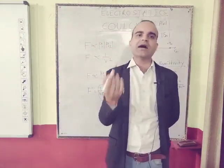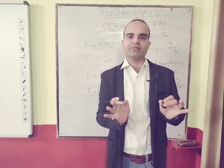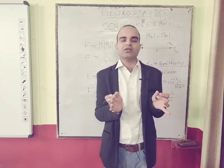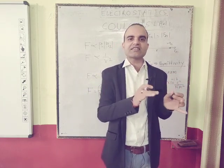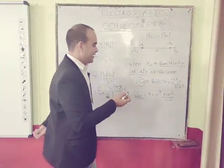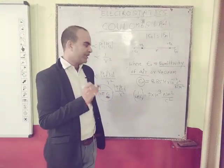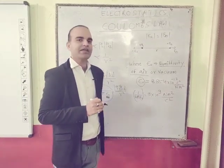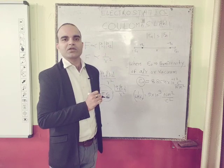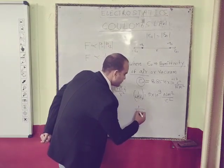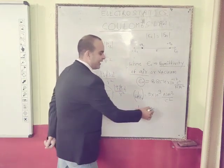The more the permittivity, the less the force between the two charges — it is an inverse dependency. The full value 1 upon 4πε₀ is called the electrostatic constant, and its value is 9 × 10⁹ Newton meter square per Coulomb square. We can also use k in place of 1 upon 4πε₀, where k is called the electrostatic constant.